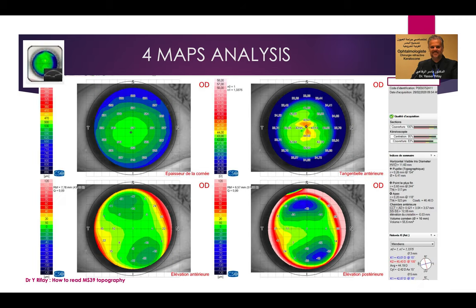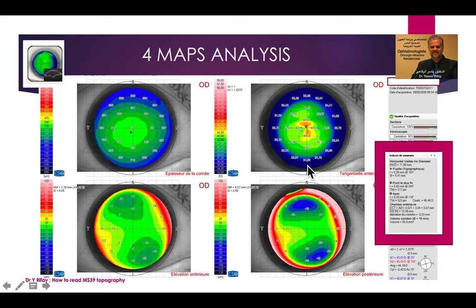Four maps analysis is the standard display with the thickness of the cornea, the anterior tangential map, and the anterior and posterior elevations. With this four map format we have numeric data, and we will start to analyze the numeric data before analyzing the maps.